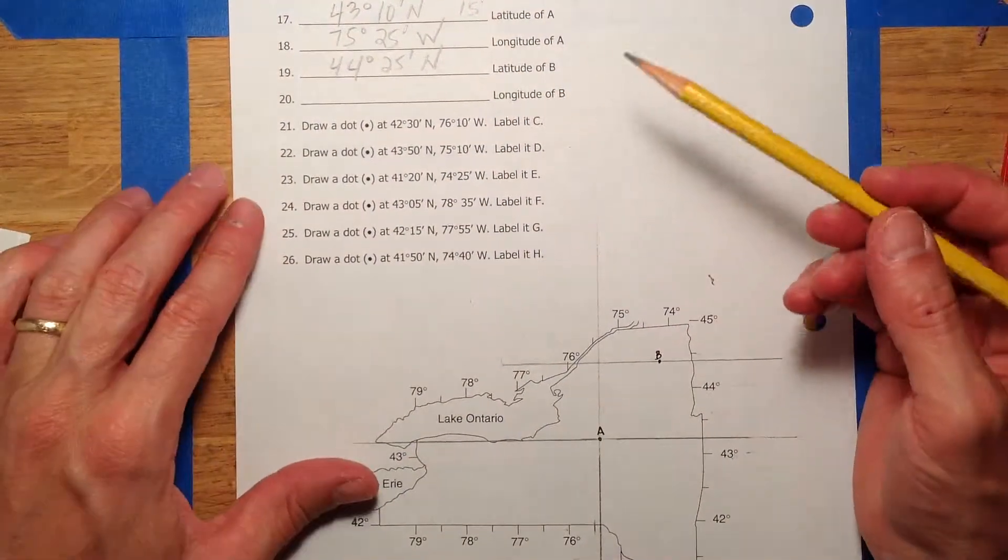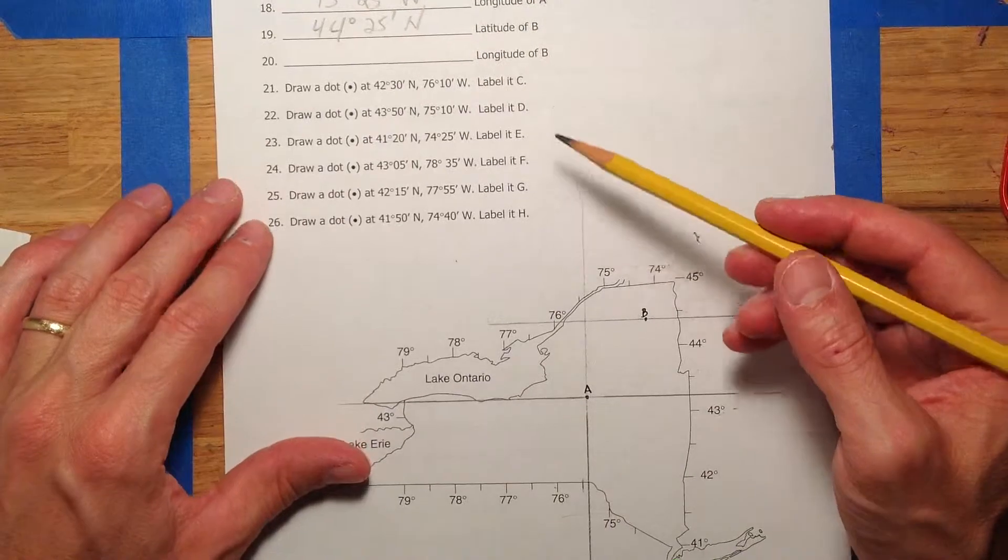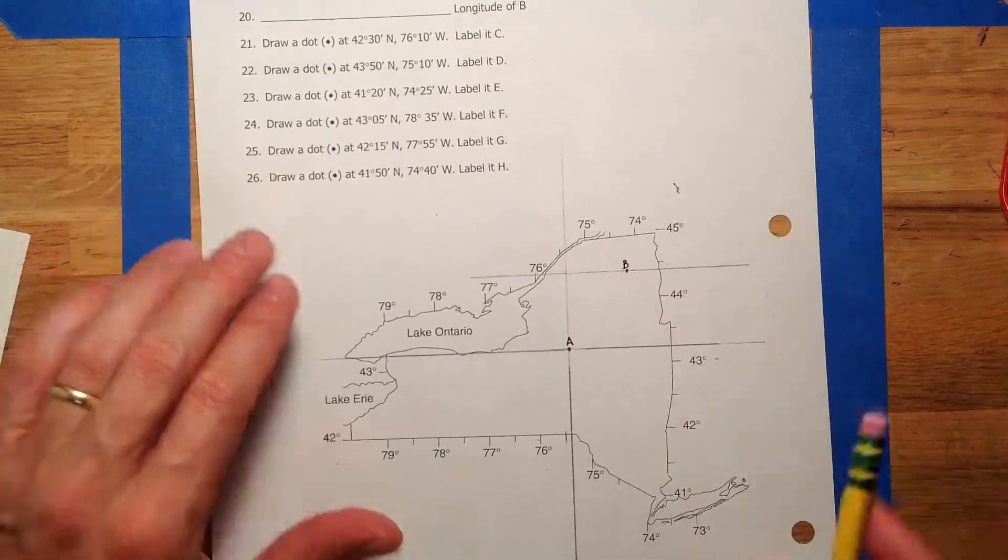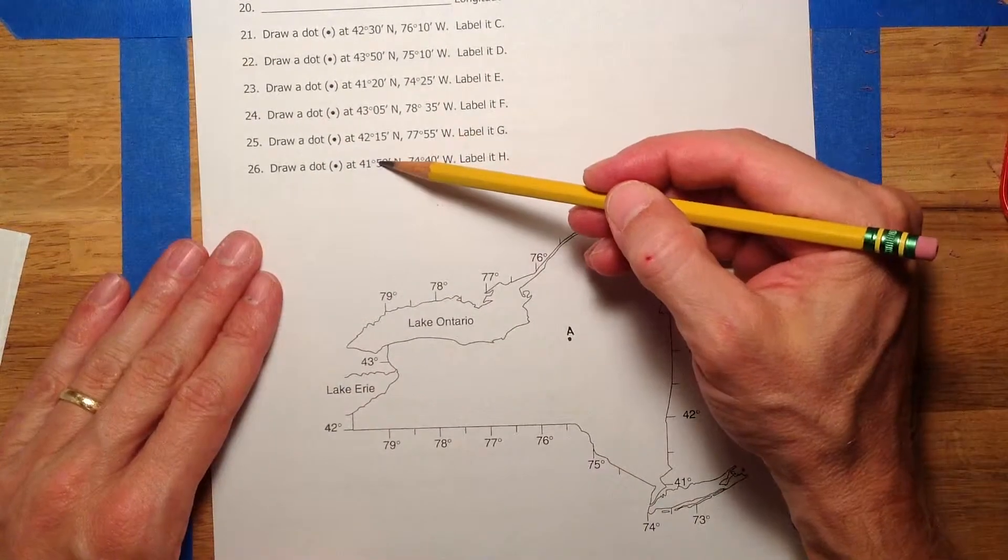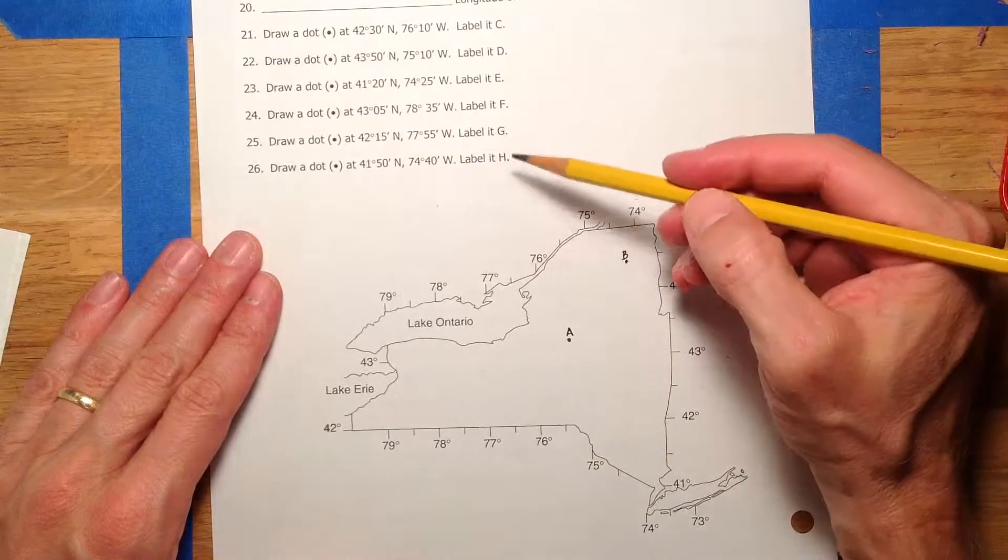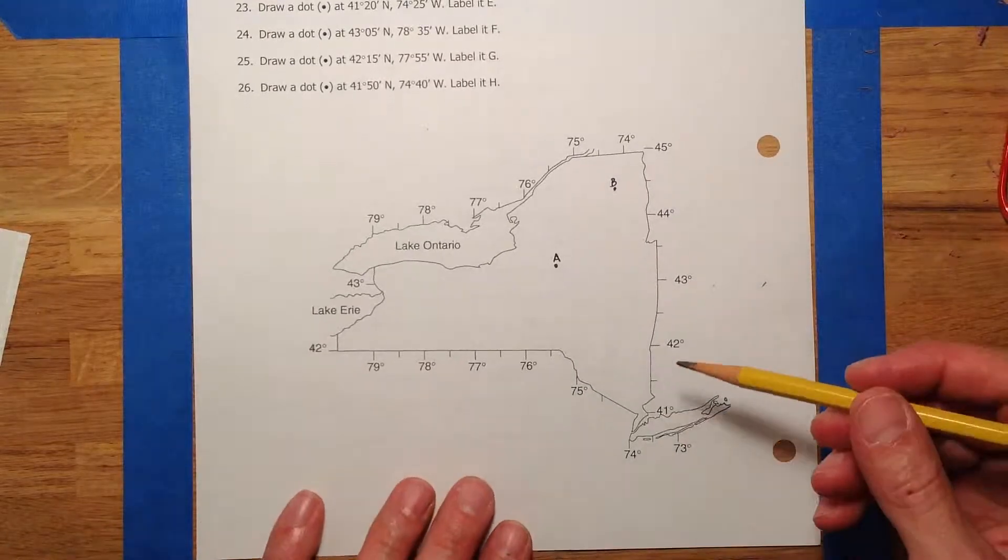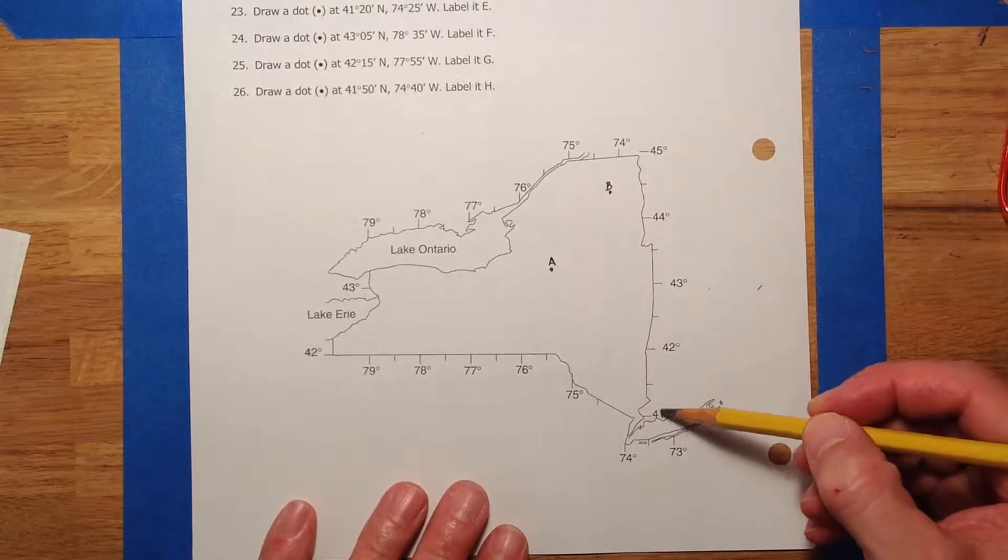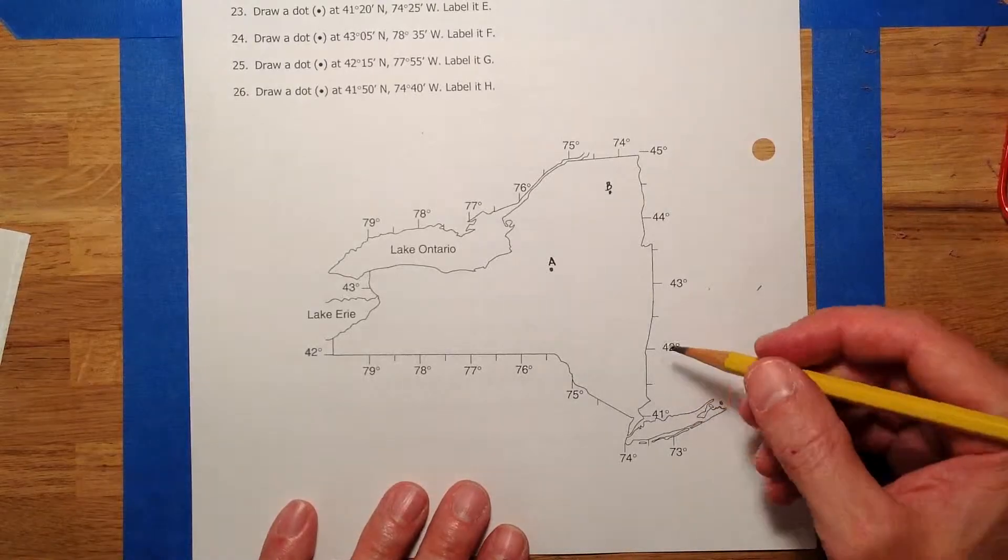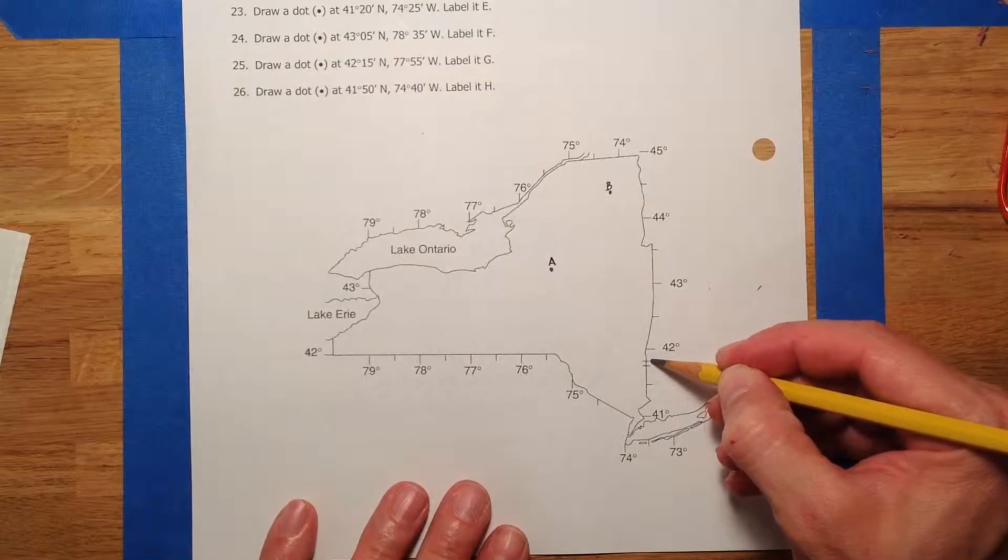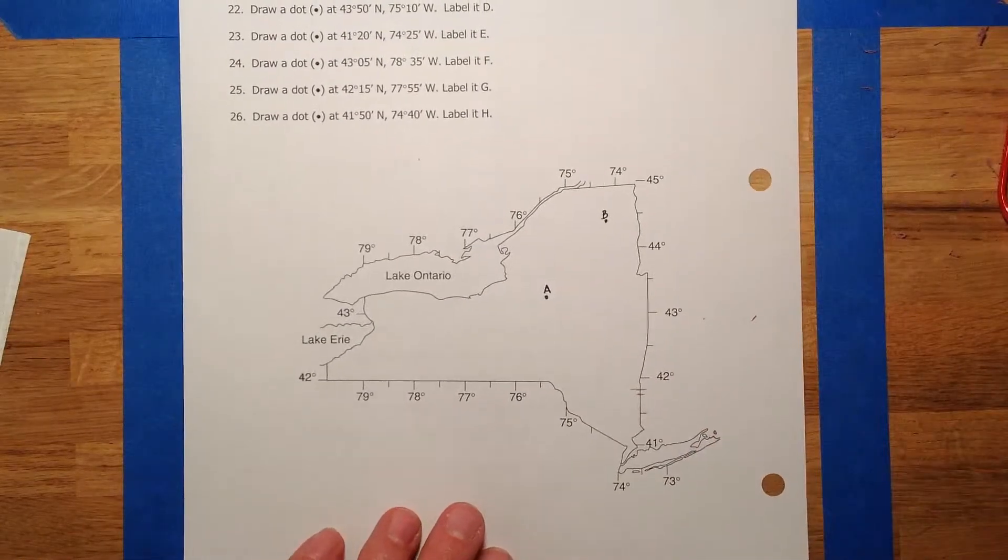All right. Let me just do a couple here. Draw a dot at these coordinates and label it H. Let me get another one more. Here we go. Nice clean copy. So, 41 degrees, 50 minutes north. Label it H. So, the best thing to do is I'm going to find 41 degrees, 50 minutes north. So, 41 degrees. And so, this is 30. And then I got to think. So, if this is 30, about halfway of that would be 45. So, 50 is probably right about there. That's probably about 50 minutes.